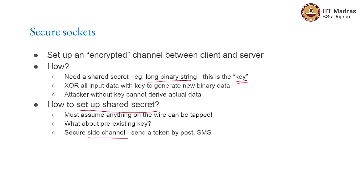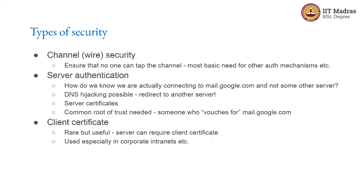How exactly this is done is beyond the scope of this course — it is a fascinating topic and anyone interested should really spend some time reading about it. One way you can think about it is: maybe I send a one-time password on SMS. That might be one way to share a piece of information. Obviously, one-time passwords are only a few digits long, so by themselves they are not long enough to be used as an encryption key, but they can be used to derive an encryption key on the other end. There are a few different forms of security: one is channel-level security — securing the wire itself — to ensure that no one can tap the channel.